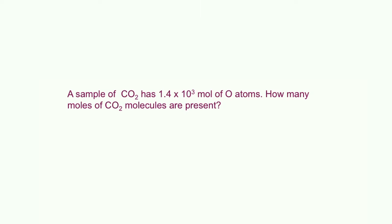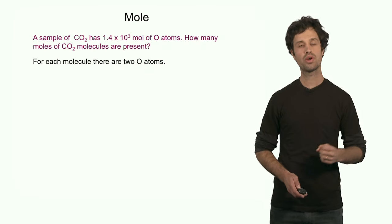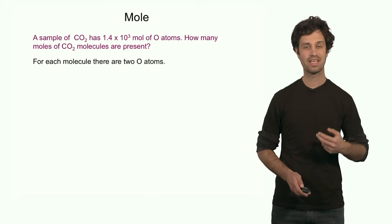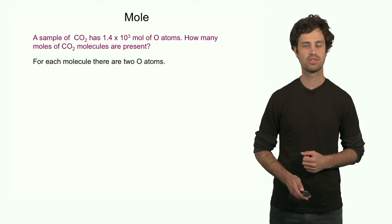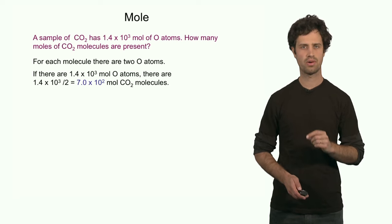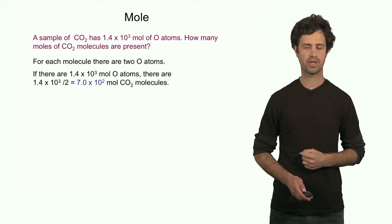Let's end this segment by looking at two last examples. Say I have a sample of carbon dioxide, and the sample contains a total of 1.4 times 10 to the 3rd moles of oxygen atoms. I can ask: how many molecules of CO2 do I have? Each carbon dioxide molecule has 2 oxygen atoms, so the total number of CO2 molecules is half as much: 1.4 times 10 to the 3rd divided by 2 equals 7.0 times 10 to the 2nd moles of CO2 molecules.